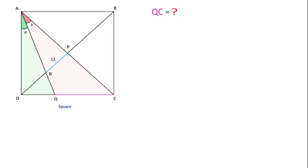Welcome to Definite Mind. In this question, ABCD is a square, and AC and BD are the diagonals intersecting at point P. The length of PR is 12 units. Since the green and red angles are equal, AQ will be the angle bisector of angle DAC. With this information, we have to find the length of QC.